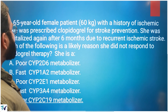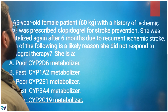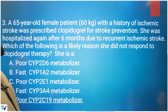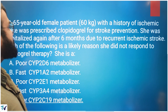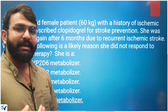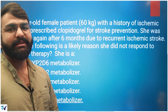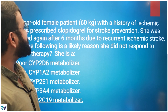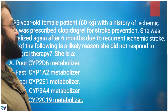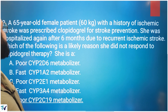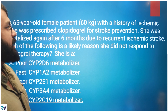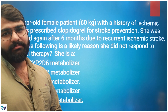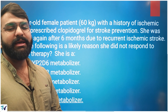This is the first case. The patient is a 65-year-old female with a body weight of 60 kg, presenting with a history of ischemic stroke. Ischemic stroke involves ischemia — reduced blood supply to brain cells.